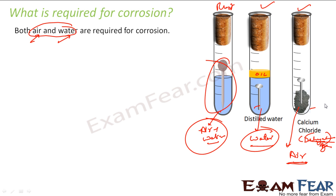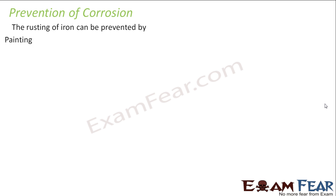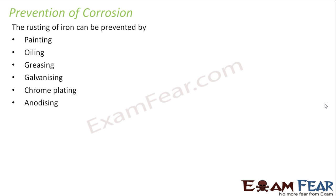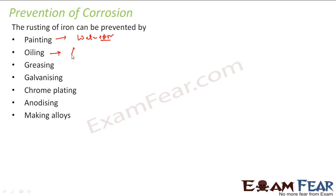So we can stop one of these to prevent corrosion. We can stop corrosion by painting, oiling, greasing, galvanizing, chrome plating, anodizing, or making alloys. Painting creates a layer that blocks both water and air. Oiling also creates a layer that avoids air. Greasing does the same thing. Galvanizing is something new we will learn. Chrome plating is plating a layer of chrome. Anodizing and making alloys are also new topics we will cover.